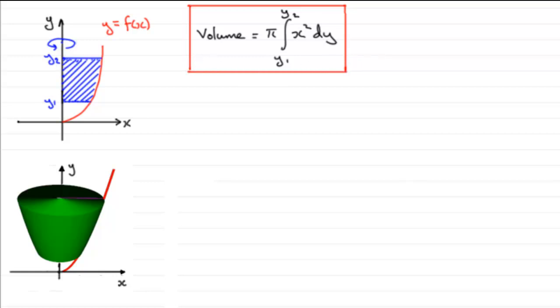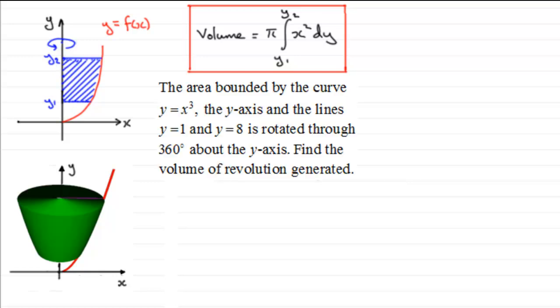Now to demonstrate this, what I've got here is a simple example. We've got the area bounded by the curve y equals x cubed, the y-axis and the lines y equals 1 and y equals 8. It's rotated through 360 degrees about the y-axis. Find the volume of revolution generated.